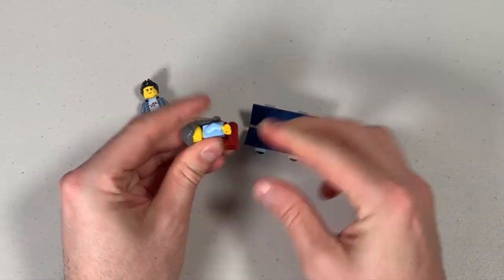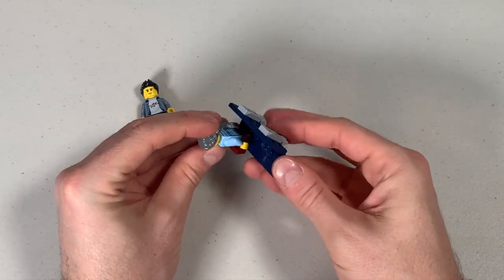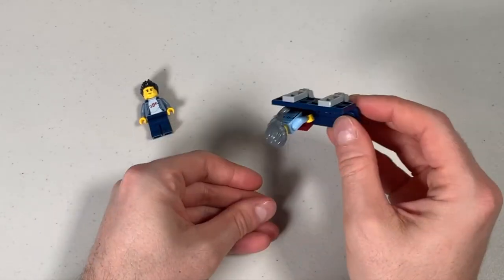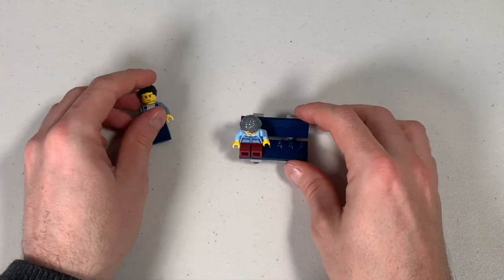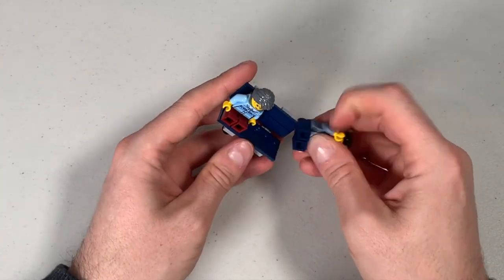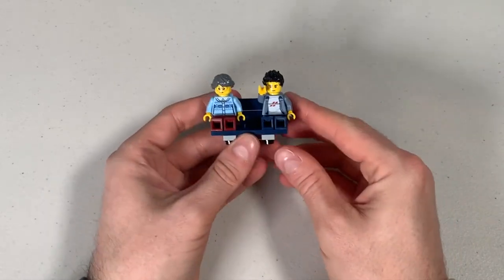And so as I was saying, with the studs on the park bench, it means you can put your minifigs on and they will sit and not fall off. So that is perfect. Let's take a look here with the two minifigs on the bench. There we go. Nice and simple park bench.